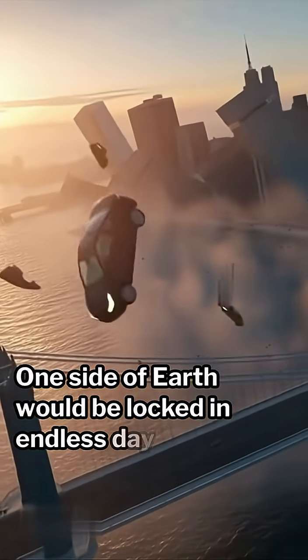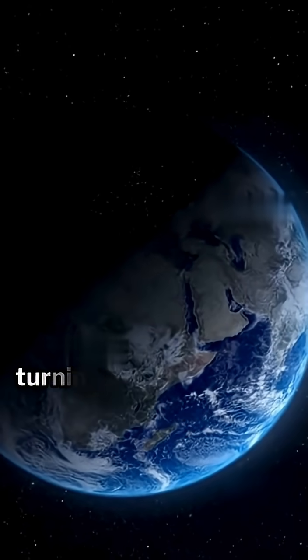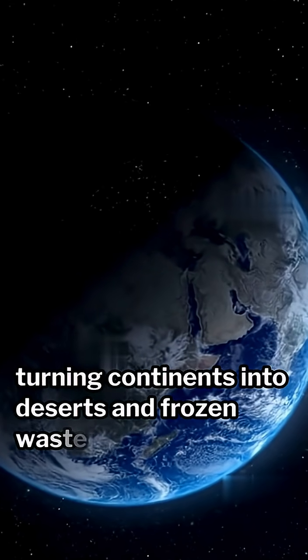One side of Earth would be locked in endless daylight, the other in eternal night. Oceans would drain toward the poles, turning continents into deserts and frozen wastelands.